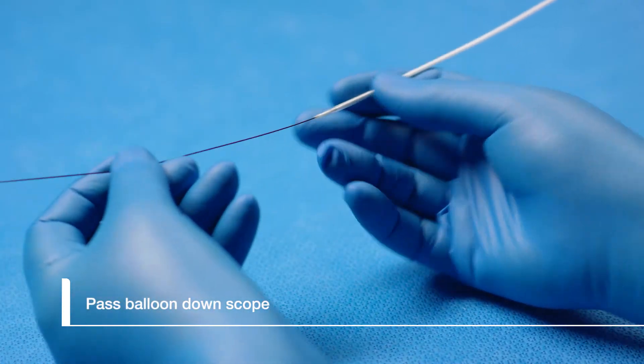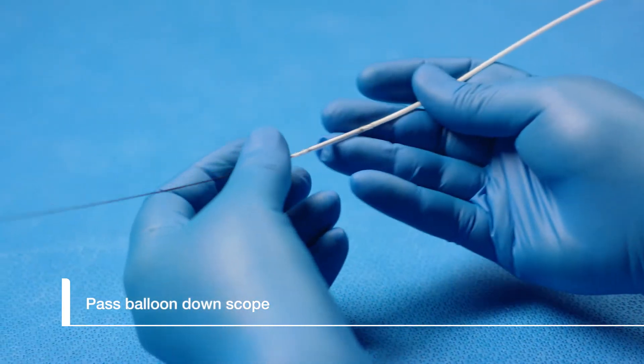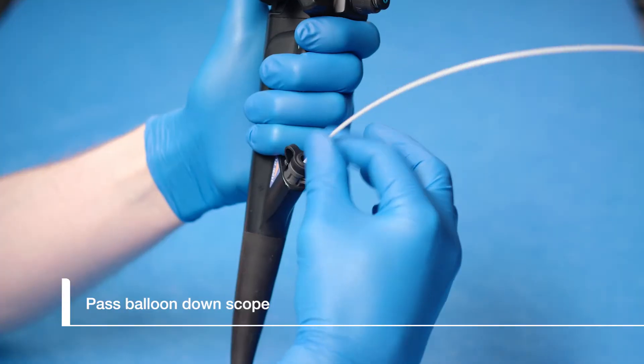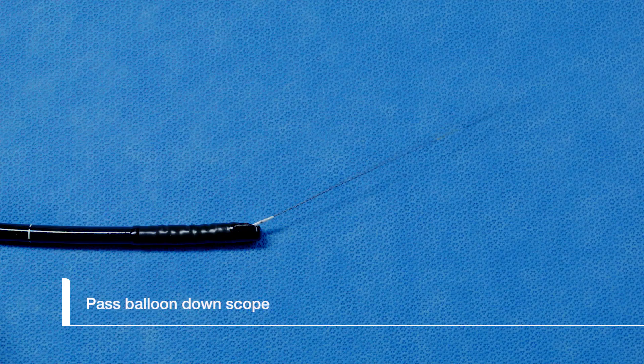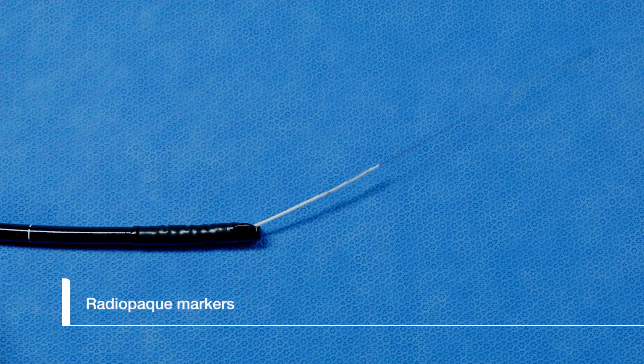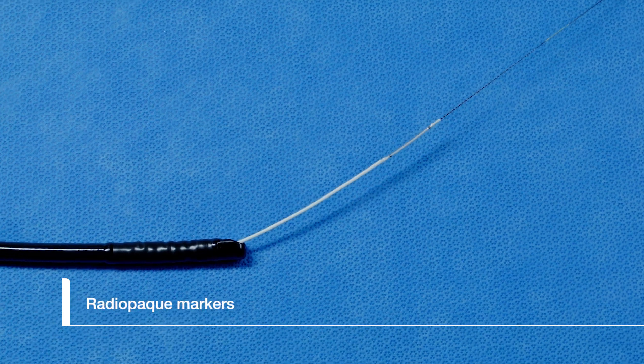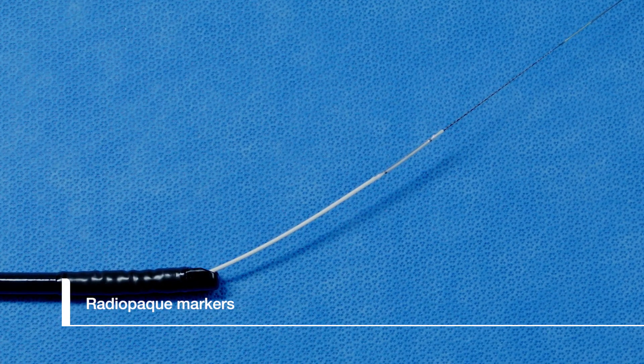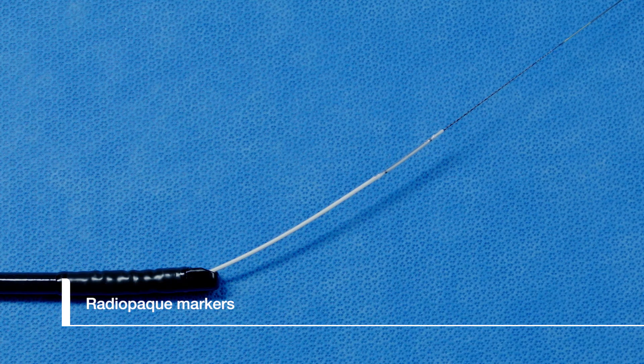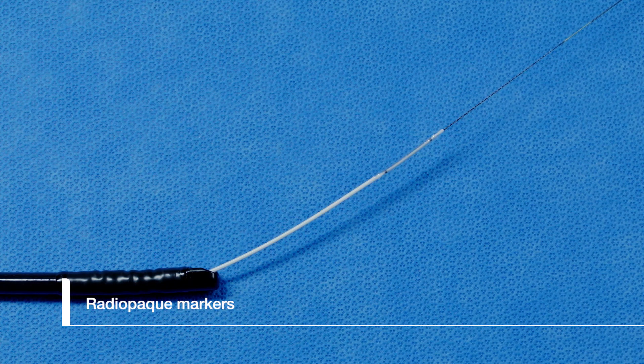Load the balloon over a .035 inch or smaller guide wire and down the scope into the patient. Once in the bile duct, radio opaque markers on the balloon will guide where the balloon is located. The markers should be placed distal and proximal to the stricture.